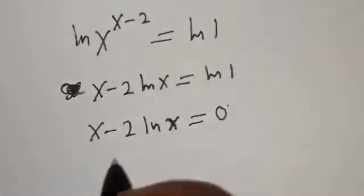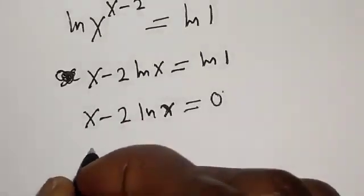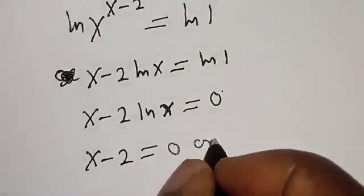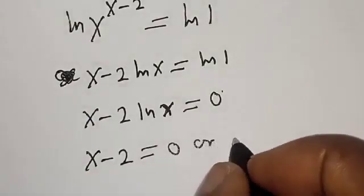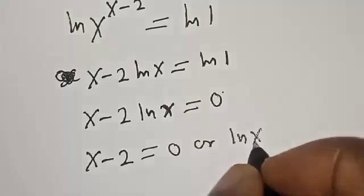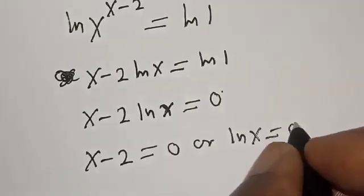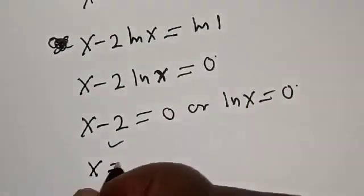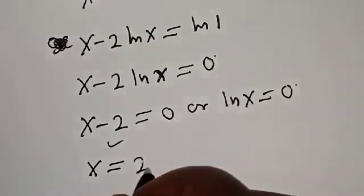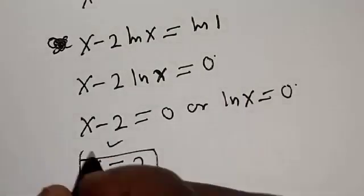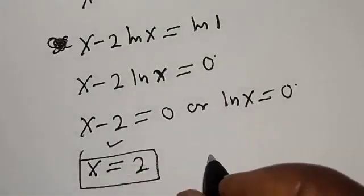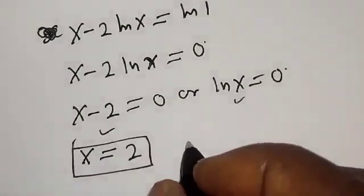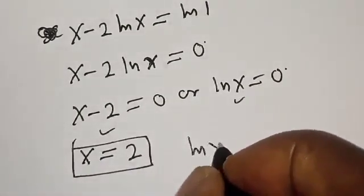Then we have two cases here: s minus two is equal to zero, or the natural log of s is equal to zero. From the first case, s is equal to two — that is the first value of s. From the second case, we have the natural log of s equal to zero.